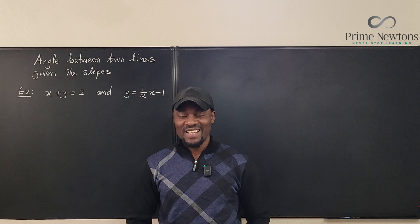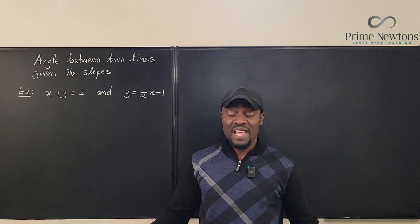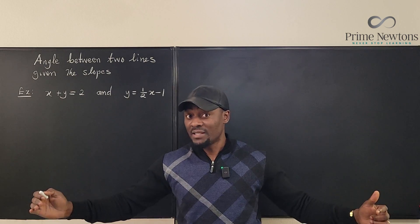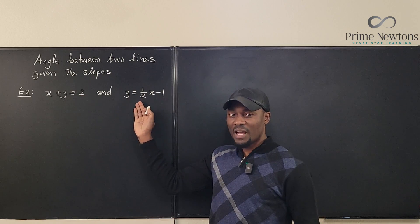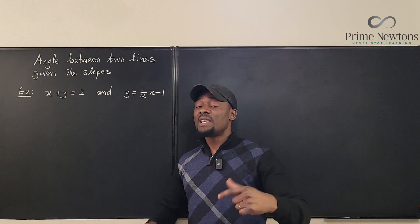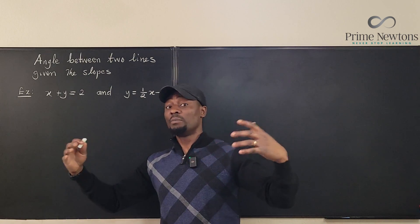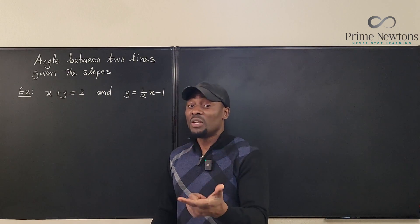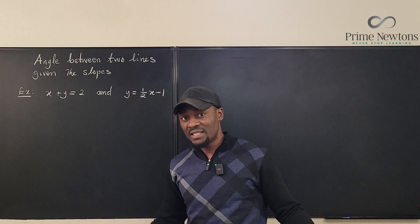Welcome to another video. Let's do some coordinate geometry — we want to find the angle between two straight lines. When we say the angle between two lines, we're referring to the acute angle, not the obtuse angle, not the reflex angle. We're talking about the smallest angle between both of them, usually not greater than 90 degrees.